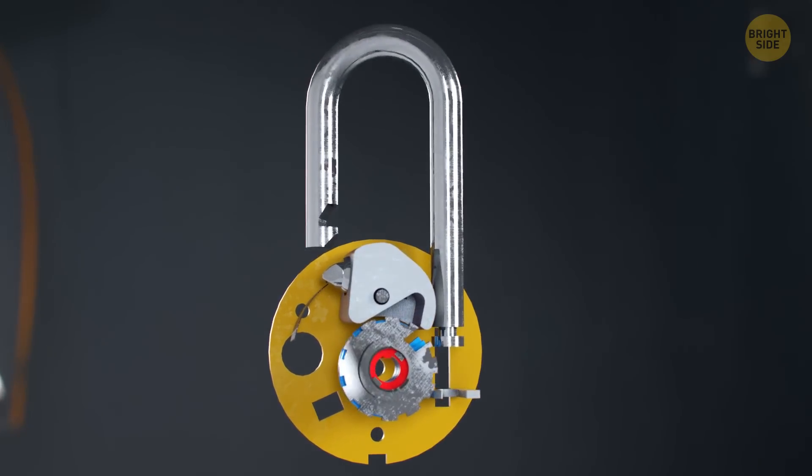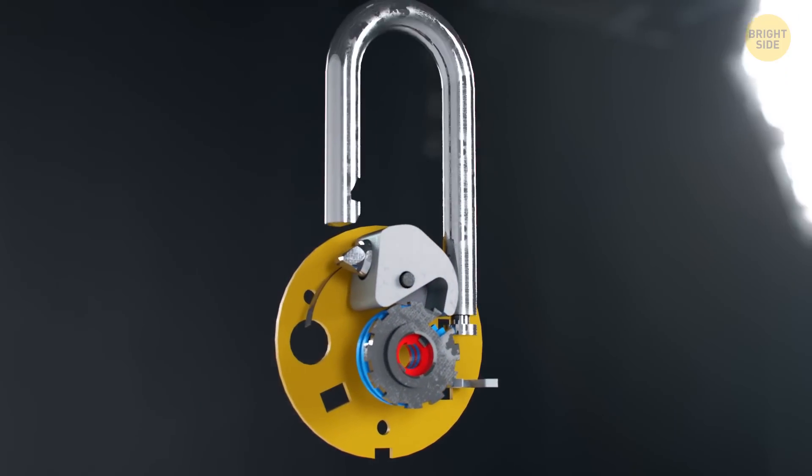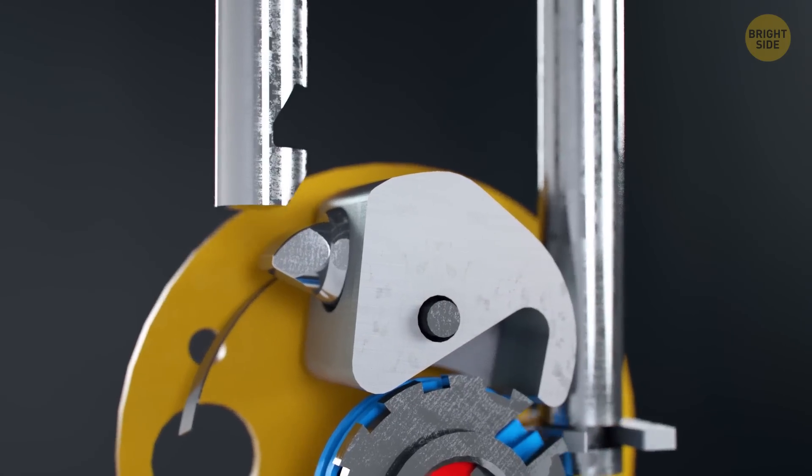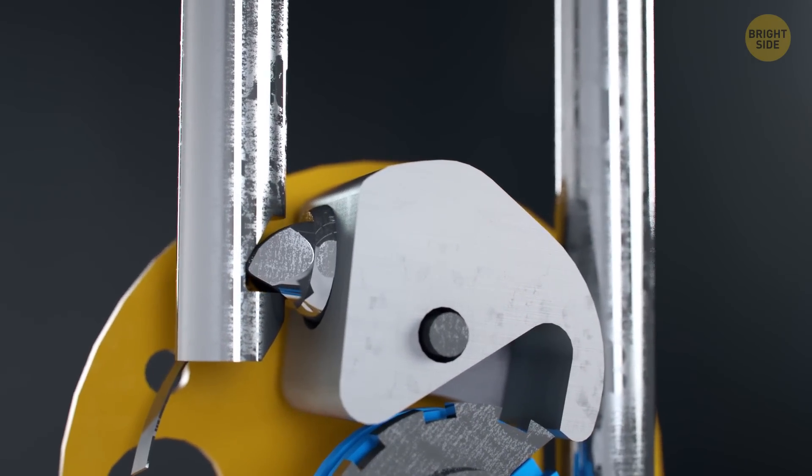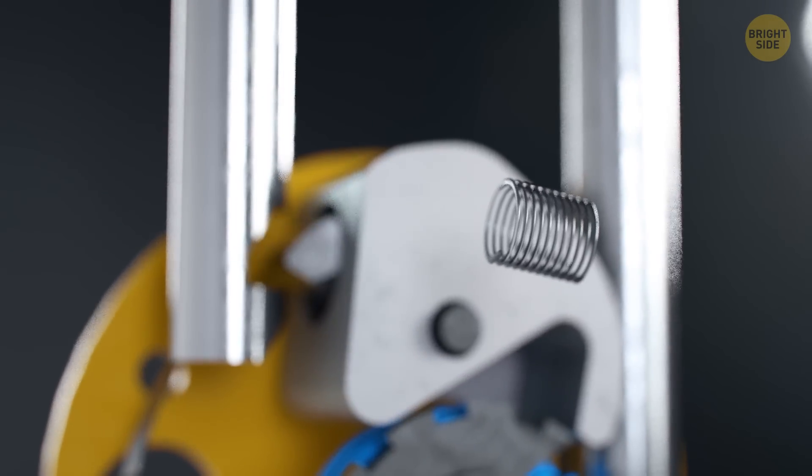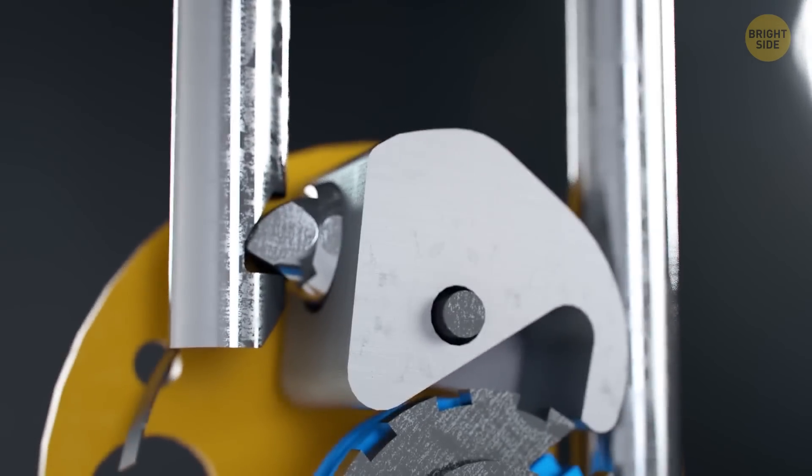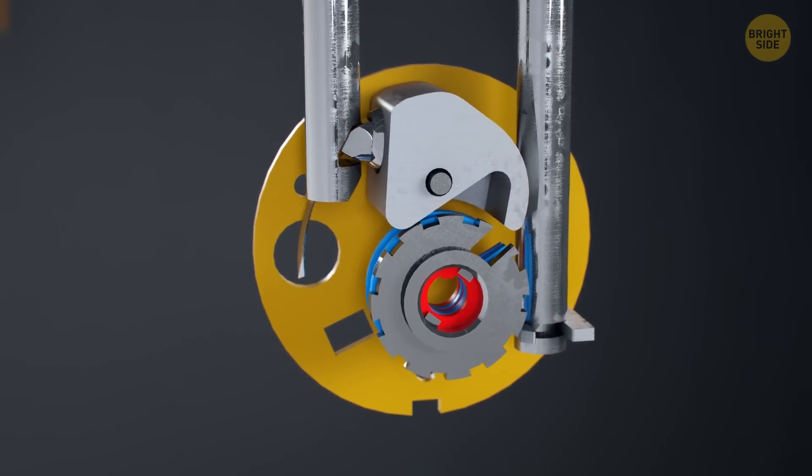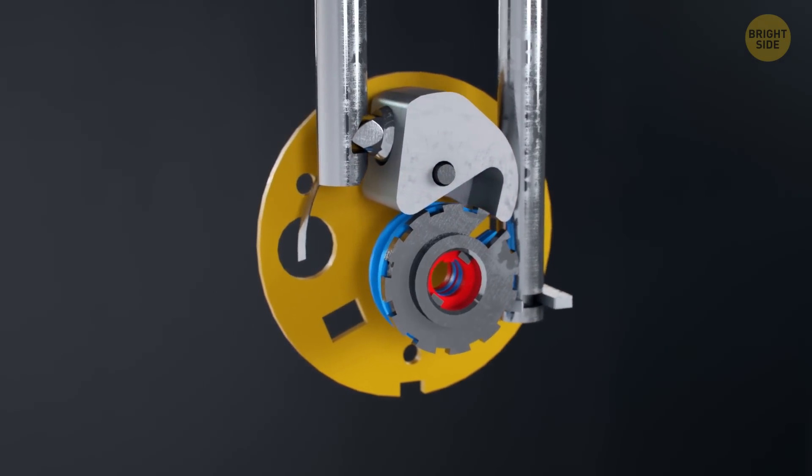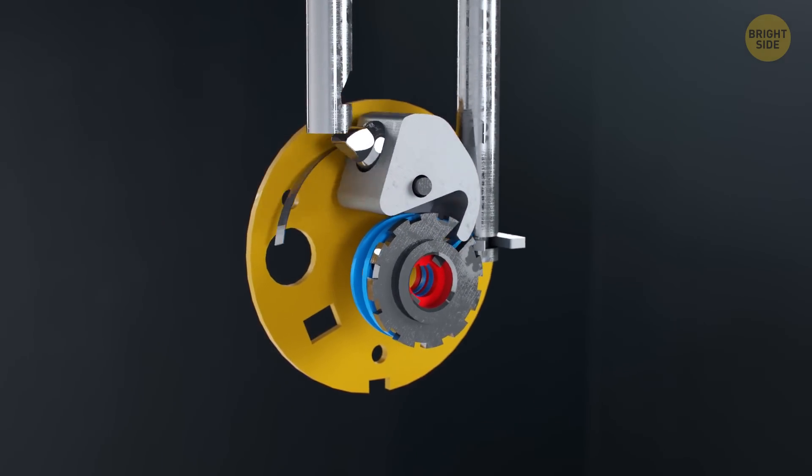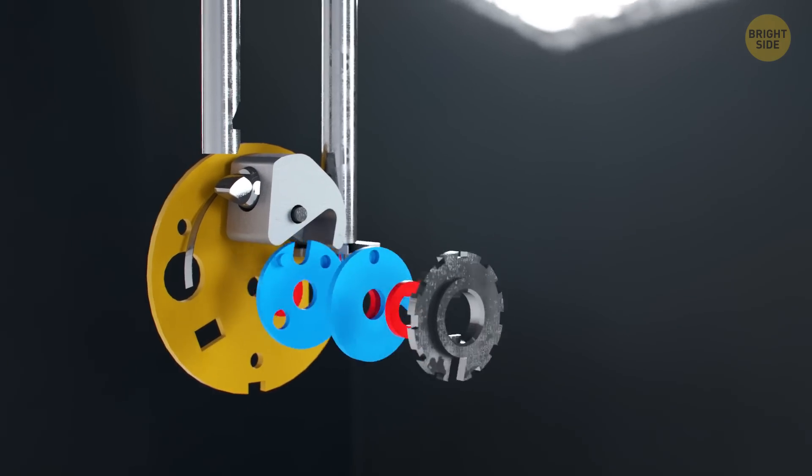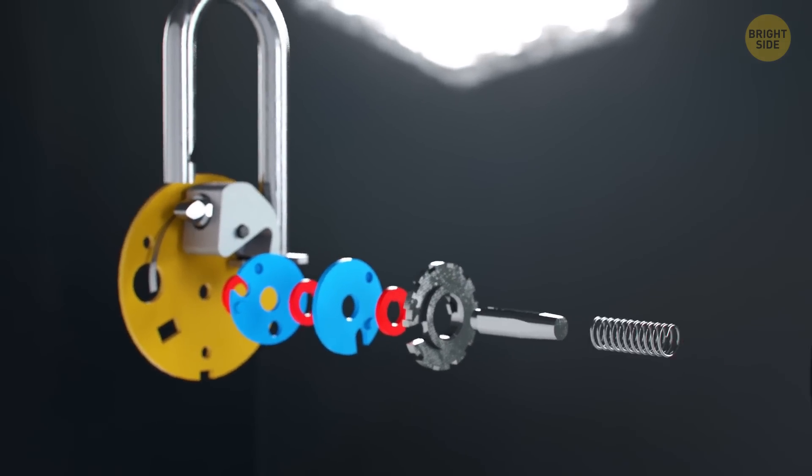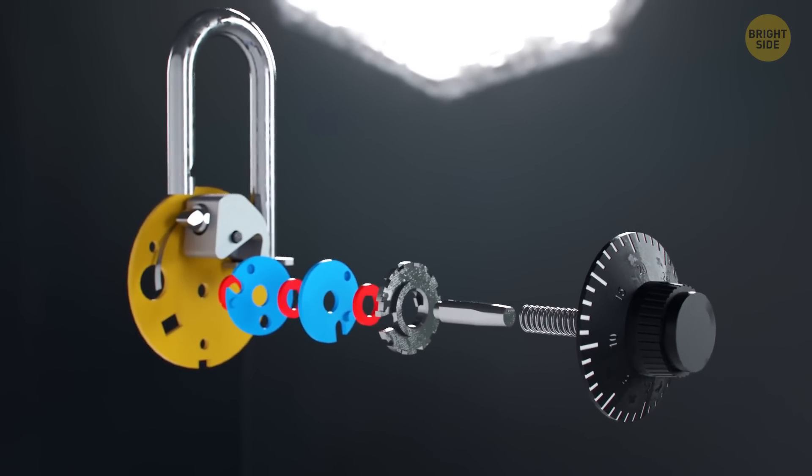When you close the lock, you push the shackle down. It presses on the latch and causes its spring to compress. Then the spring pushes the latch back into the slot and the lock is closed again. But we can see that we can open the lock just by pulling the shackle out. So we need a mechanism that will prevent the lever from turning freely and keep the lock closed. This is where our combination mechanism comes in.